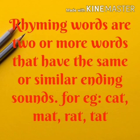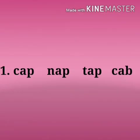So these all words end with the sound '-at': cat, mat, rat, tat. So children, hope you all understood what are rhyming words. So let's start.